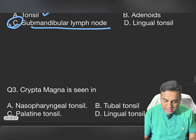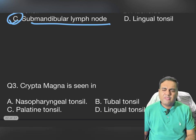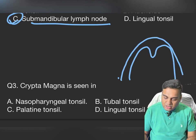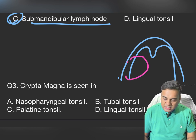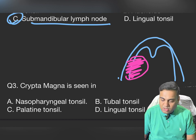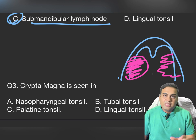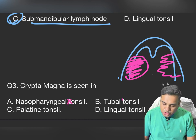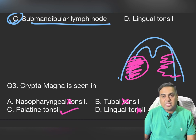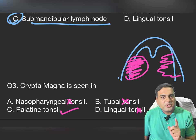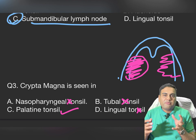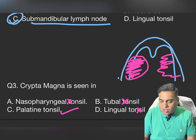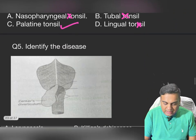Next question: cryptomagna is seen in which tonsil? In the tonsil diagram, unlike a simple drawing, we draw tonsils with lots of crypts. These crypts are present in the palatine tonsil — not nasopharyngeal, tubal, or lingual. These crypts are pharyngeal pouch remnants from intrauterine life — small spaces, bursas, and crypts — and the biggest crypt is called cryptomagna.